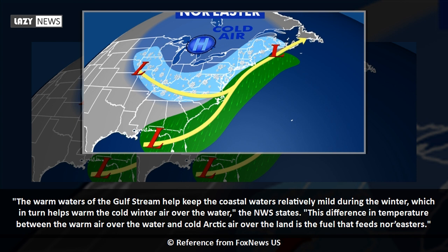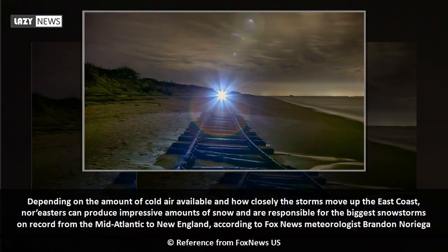The NWS states this difference in temperature between the warm air over the water and cold Arctic air over the land is the fuel that feeds nor'easters. Depending on the amount of cold air available and how closely the storms move up the east coast, nor'easters can produce impressive amounts of snow.